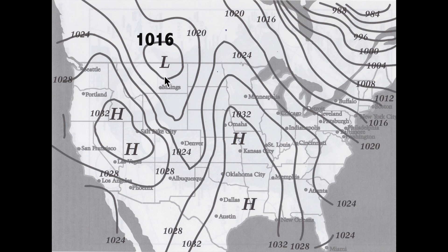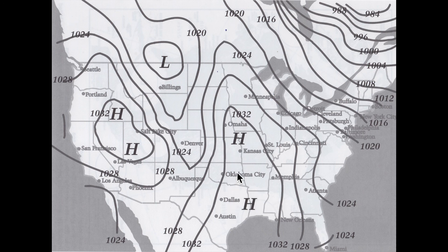Over here you can see some H's — there are two H's in a marked area of 1032. This general area circling around Portland, San Francisco, Las Vegas, and Salt Lake City has a high pressure area. And over here there are another two H's showing a pretty big chunk of high pressure near Austin, Dallas, Oklahoma City, Kansas City, Omaha, St. Louis, and Memphis — all these locations have relatively the same pressure.